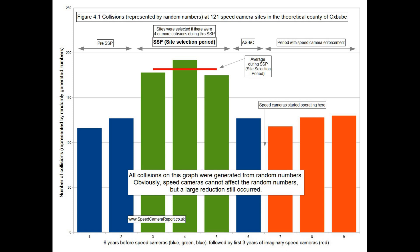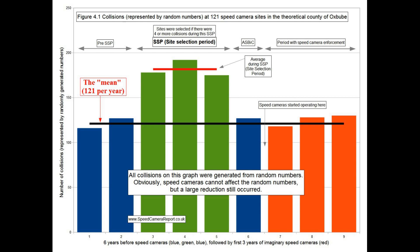The most obvious feature is that bump in the data during the SSP. That bump is caused by the site selection process, because we chose those sites when the collision rate was unusually high during that period. Before the SSP, collisions occurred at around their mean rate. They then diverge from the mean to a higher rate at the start of our SSP.